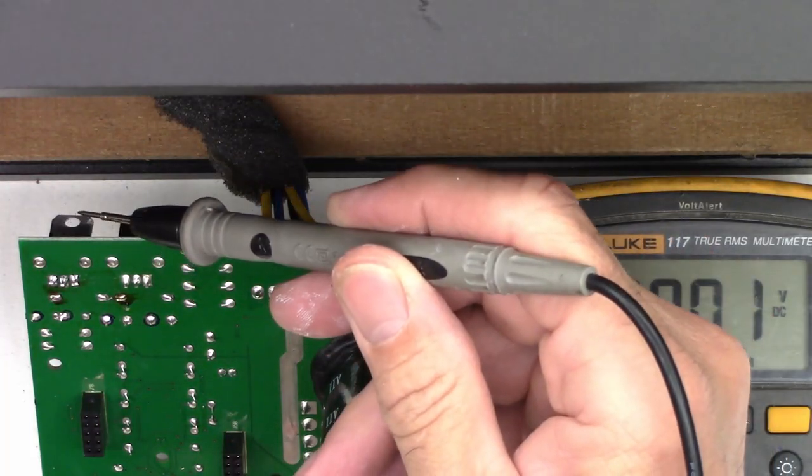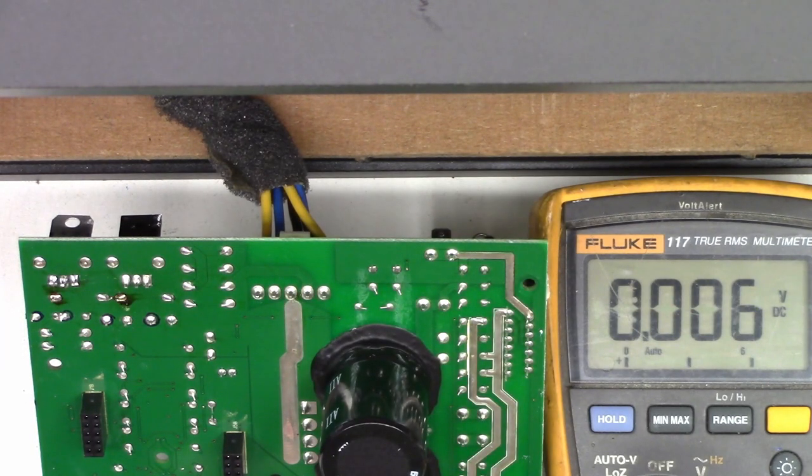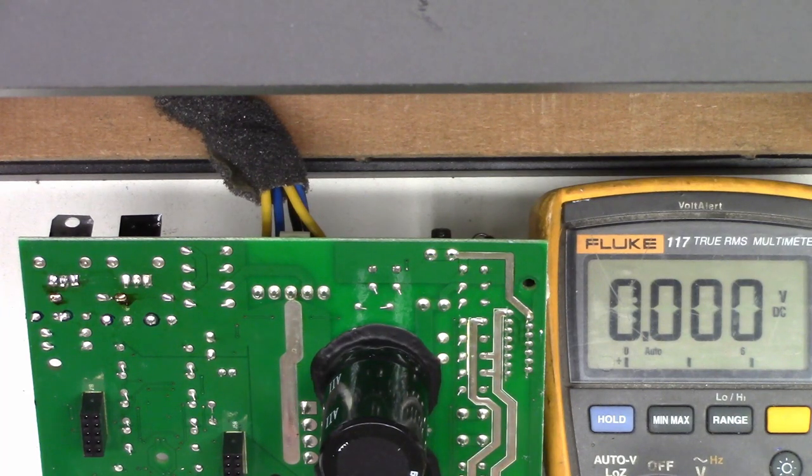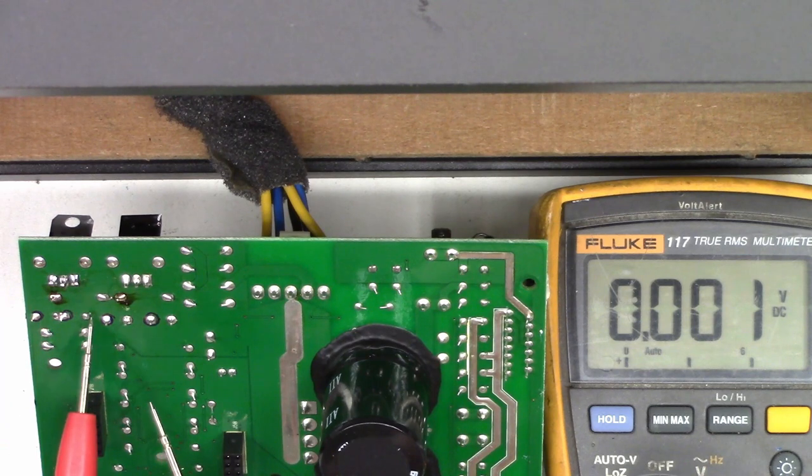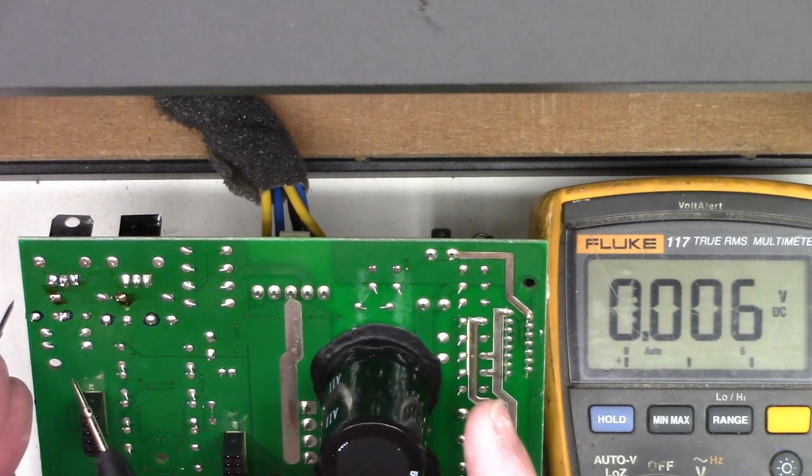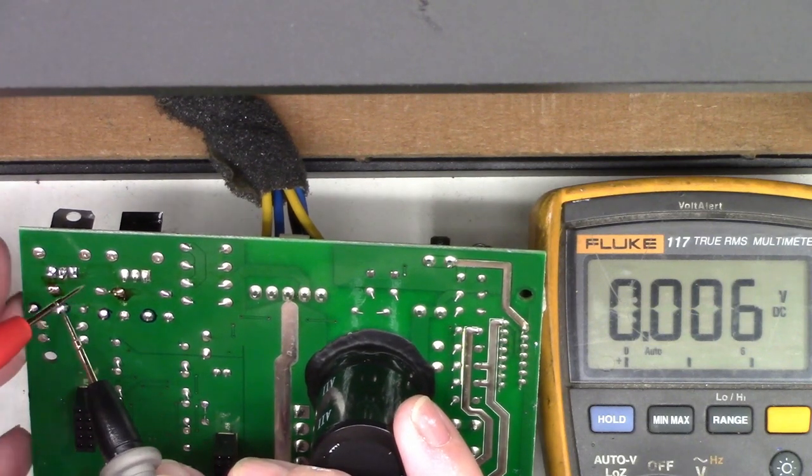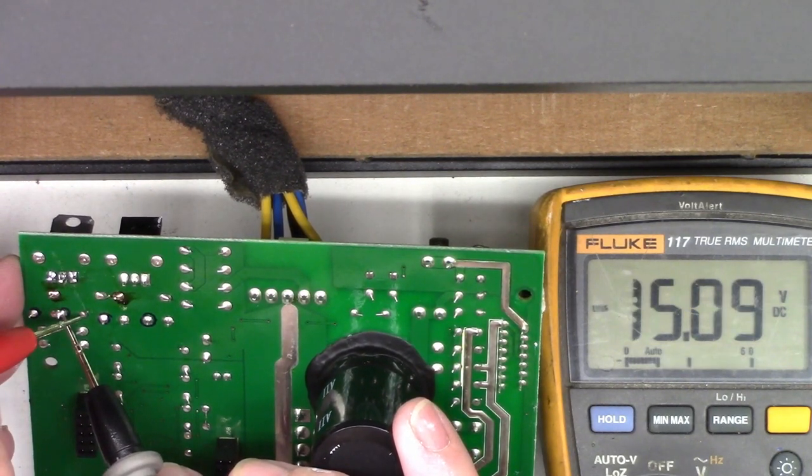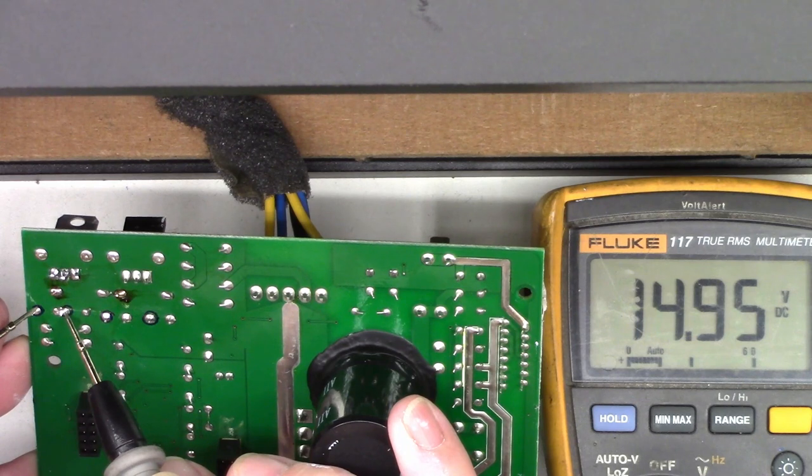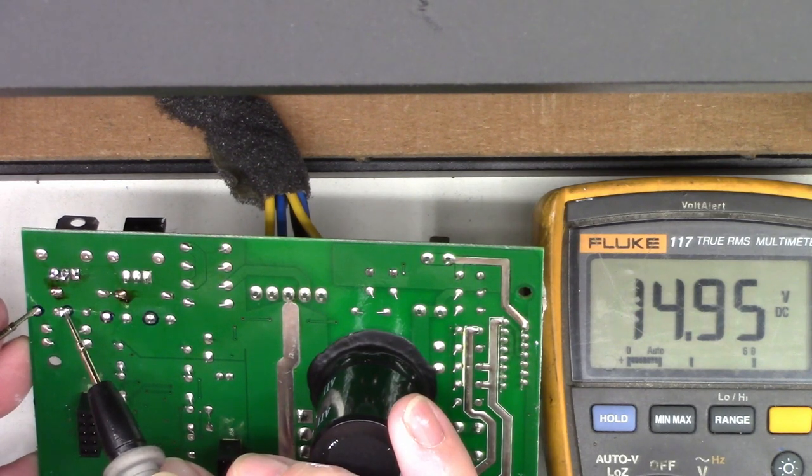As you can see right here, the new regulator is installed. I do not have it connected to the audio inputs, which are these jacks here. I do not have the speakers connected, but I'm going to fire it up and just measure the voltage across the output filter capacitors and see if we have our plus and minus 15 volts. So here we go, power on. This is the minus 15, and we have minus 15.09. This is the positive 15, and now we have 14.95. Absolutely perfect.